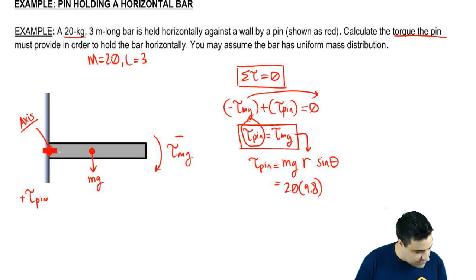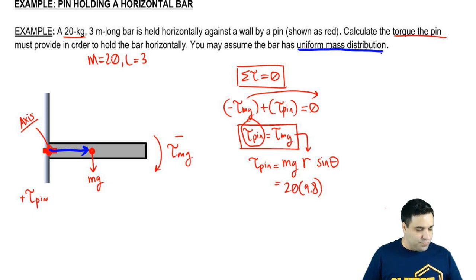R is the distance from the axis of rotation to the point where the force happens. We have a uniform mass distribution, which means Mg happens in the middle of the bar. The bar is 3 meters long. So the R vector is 1.5.